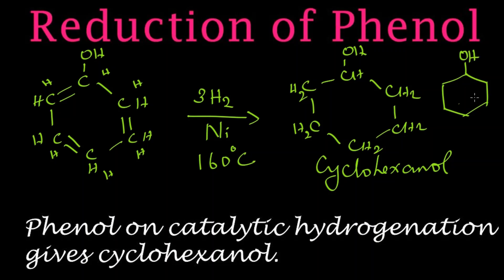By removing the double bonds inside phenol through hydrogen addition, we get cyclohexanol. So, phenol on catalytic hydrogenation — hydrogenation being another term for reduction — gives cyclohexanol. Thank you.